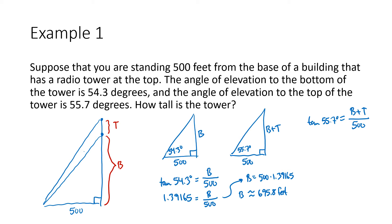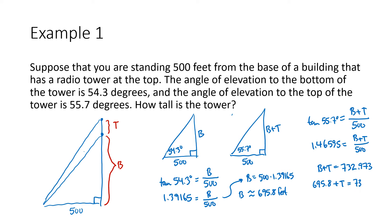Going to the second equation: tangent of 55.7 degrees gives 1.46595. That equals B plus T over 500. Multiplying both sides by 500, B plus T equals 732.973. Plugging in B = 695.8, we get 695.8 plus T equals 732.973, so T is approximately 37.2 feet. That's the final answer.